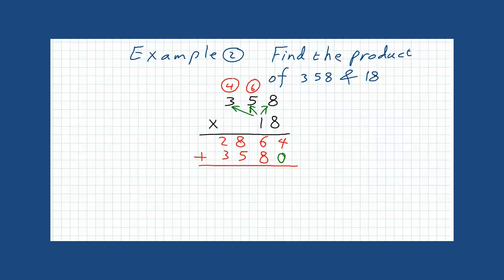And our final answer is going to be 4 plus 0 is 4. 6 plus 8 is 14. 1 in the hand. 1 plus 8 is 9. Plus 5 is 14. Another one on the hand. 1 plus 2 is 3. And 3 is 6. The final answer is 6,444.